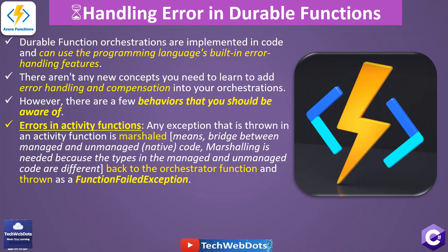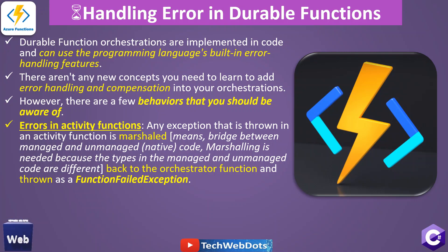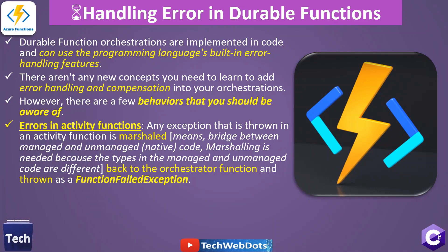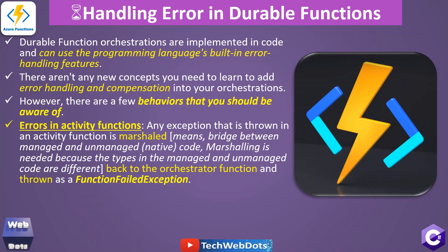However, there are a few behaviors that you should be aware of. The very first thing is errors in activity functions. Any exception that is thrown in an activity function is marshalled — what we mean by marshalled is there is a bridge between managed and unmanaged code. Marshalling is needed because the types in managed and unmanaged code are different.